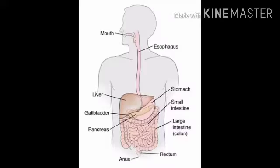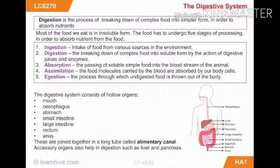The various organs of the digestive system are: mouth, esophagus, stomach, small intestine, large intestine, and anus. Some accessory glands are associated with digestion, like the liver, gallbladder, and pancreas. All these organs are joined together in a long tube called the alimentary canal.